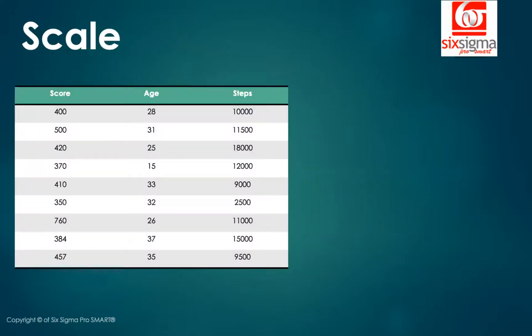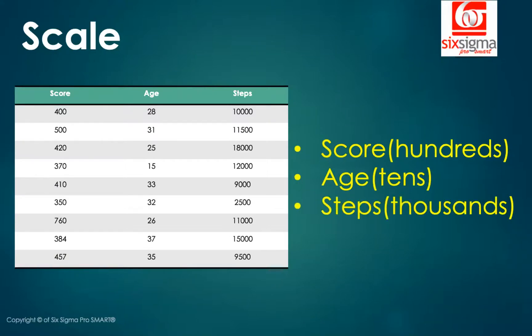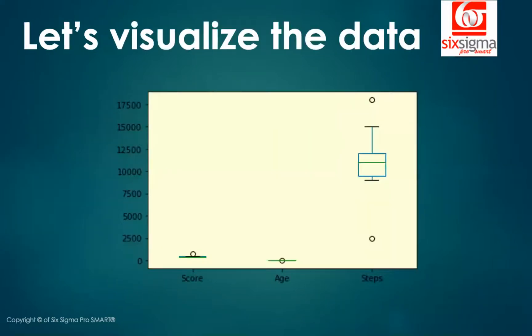Third is scale, and we'll spend some time to understand this a little better. Now, if you look at this data, we have the score that's being measured in hundreds, age, which is being measured in tens. It's mostly a double digit, and steps which are mostly being measured in thousands. If I visualize the same data altogether, the three columns on a box plot, this is how it looks like. Now, I'm sure you will be a little concerned looking at these two red boxes here. What's wrong with them? The problem is that the scale while visualizing the plots is chosen as per the variable with the largest magnitude. In this case, that's steps. Its magnitude was always in thousands.